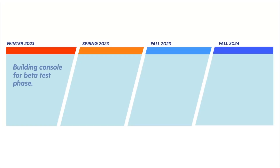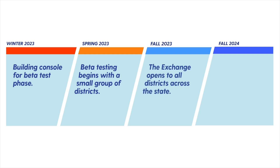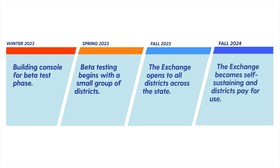The Exchange is gearing up to start beta testing with a handful of districts to develop our system. These districts vary in size and SIS providers so we can test our system's integration. Our version 2 of beta testing will happen in the spring with more options available as we continue to grow. We plan to launch statewide in the fall of 2023.